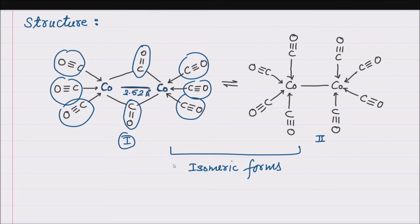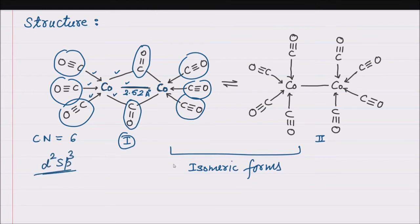In the bridged structure, the coordination number of each cobalt atom is 6. Therefore, both cobalt atoms are d²sp³ hybridized.